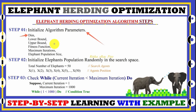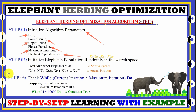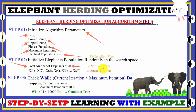In step one, we initialize the algorithm parameters: search space dimension, lower bound, upper bound, fitness function (the cost function), maximum iteration (how many times the loop will repeat), and elephant population size (the total number of search agents). In step two, we initialize the population randomly in the search space — suppose we have 50 elephants as the population size.